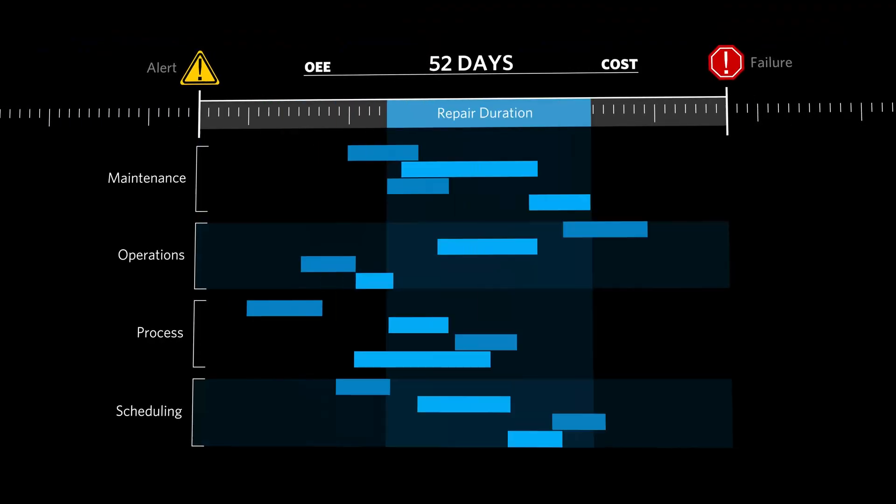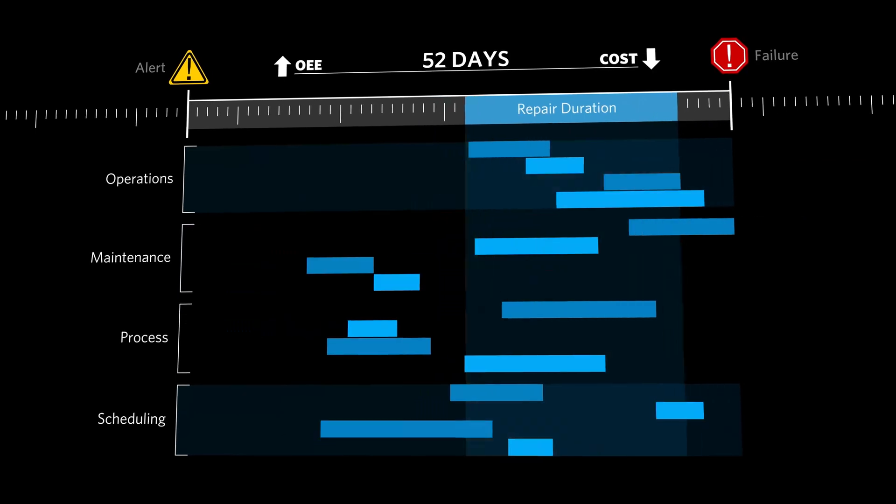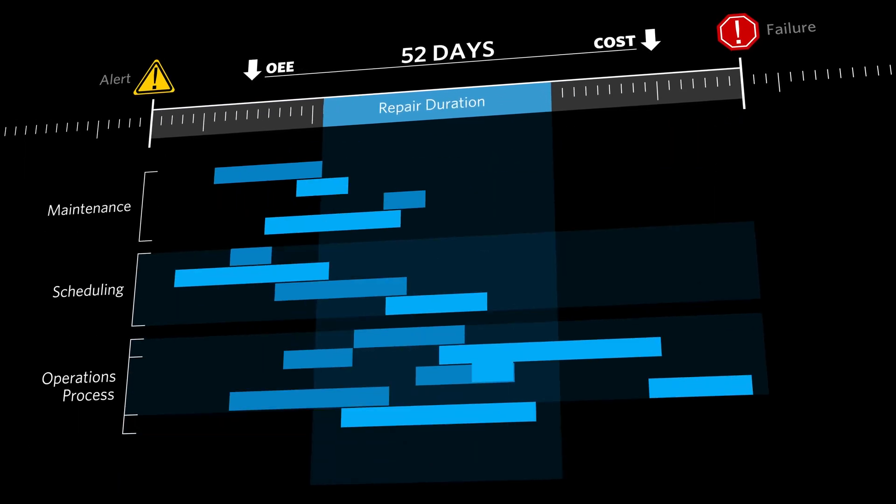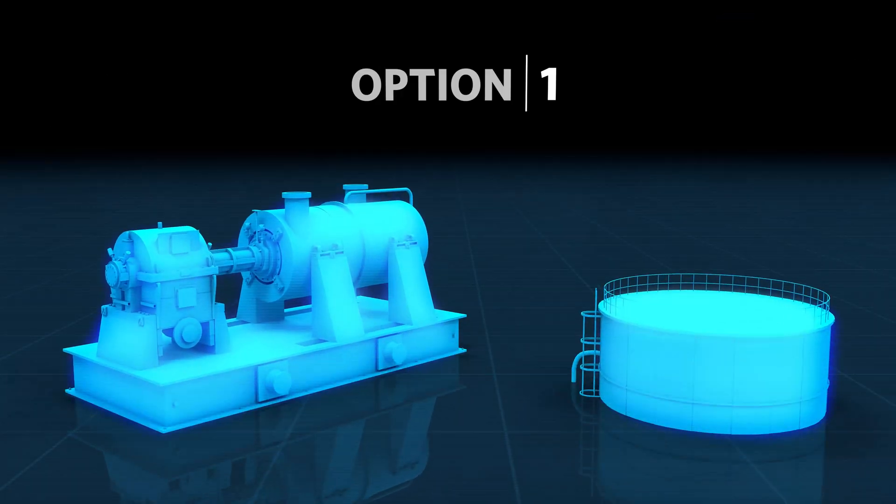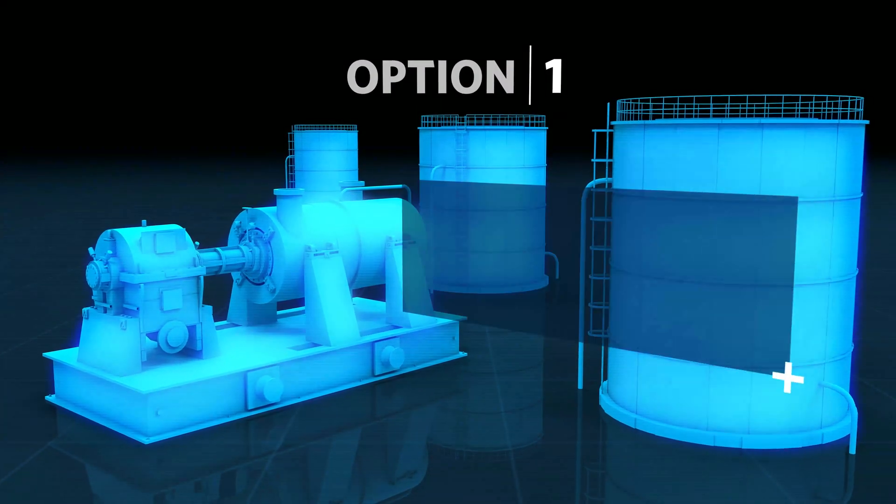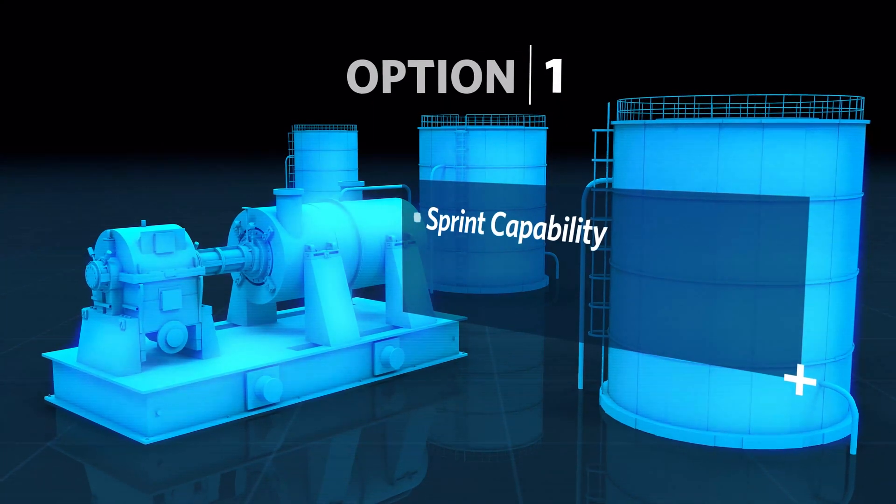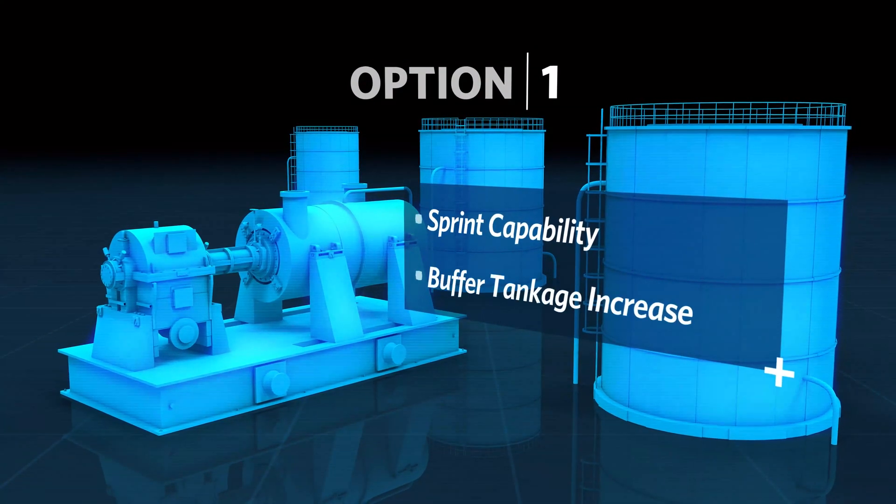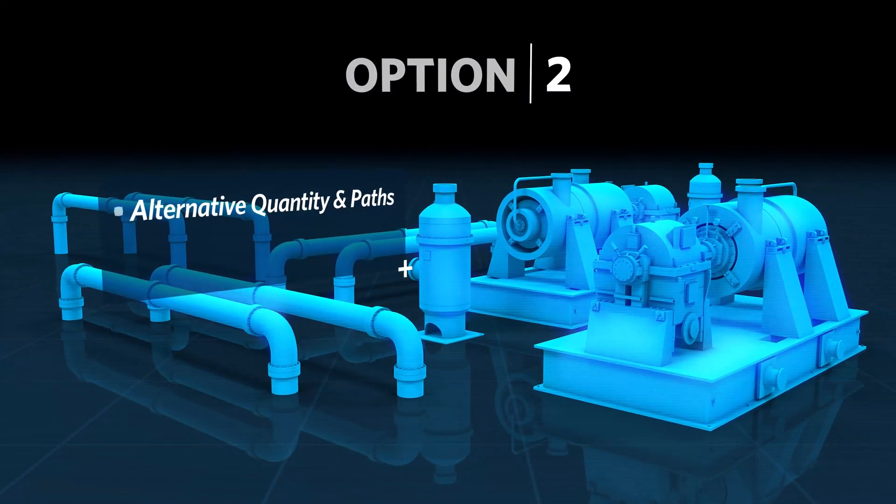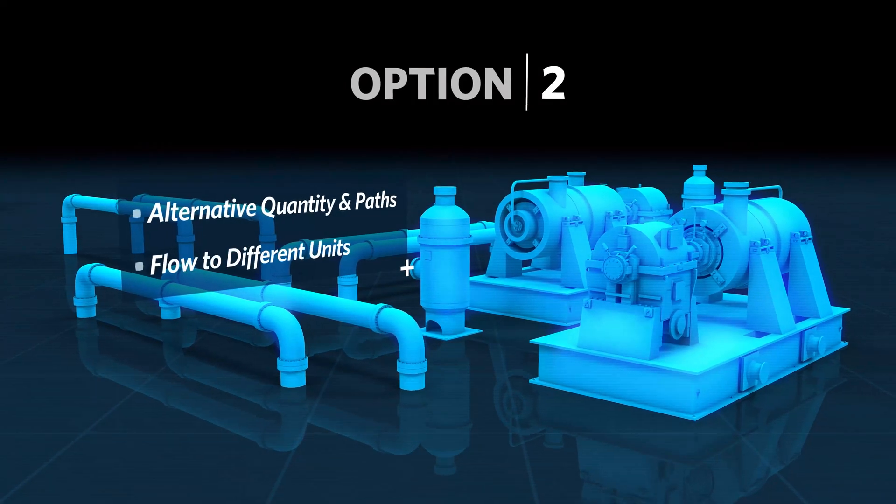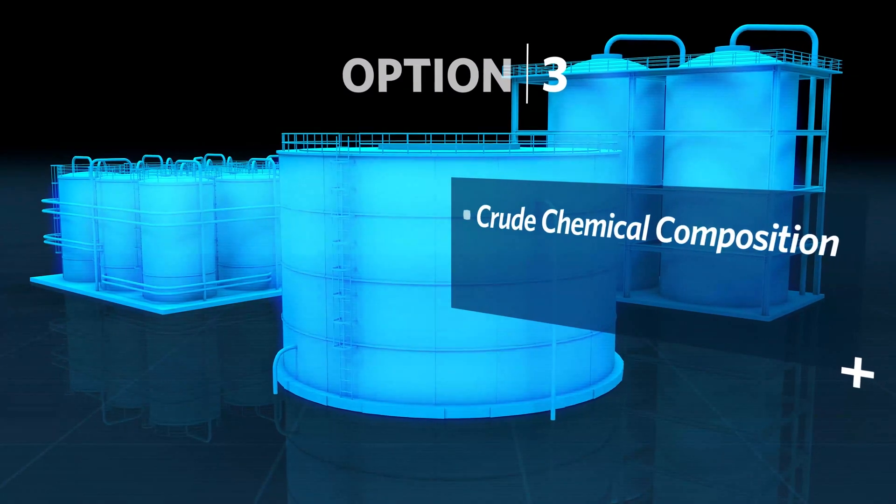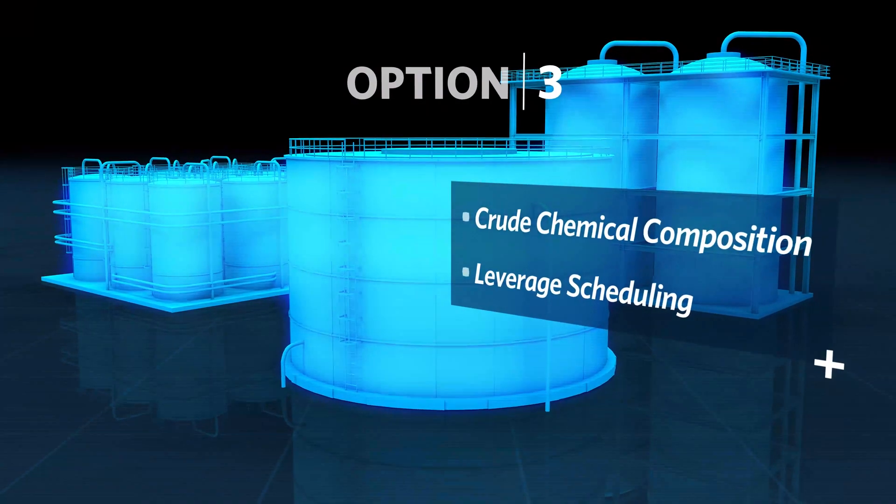Executing hundreds of possible future scenarios, Aspen Fidelis uncovers the financial consequences of different operational decisions and the risk involved in each one. In this example, options include taking the compressor down in the short term and using a sprint capability to increase NAFTA gasoline blendstock into intermediate buffer tankage, using alternative quantity and flow paths for intermediate materials to flow to different units, using crude with a different chemical composition that leverages Aspen Tech's suite of planning and scheduling software.